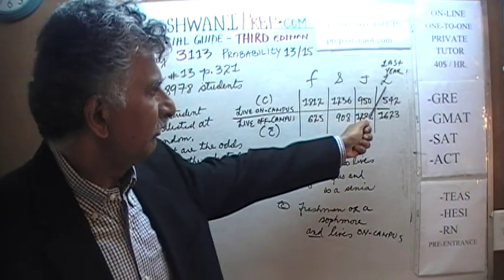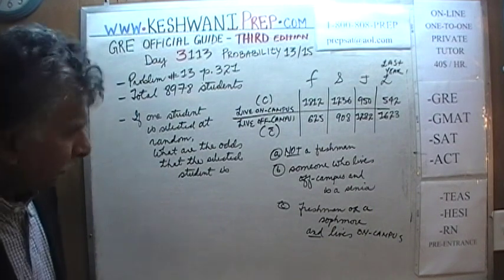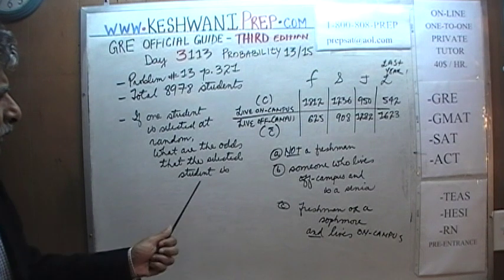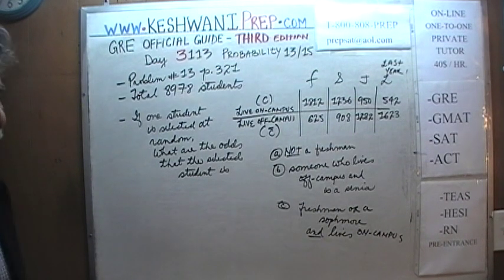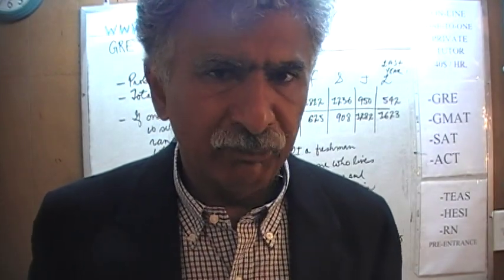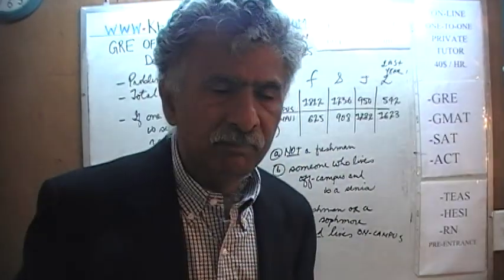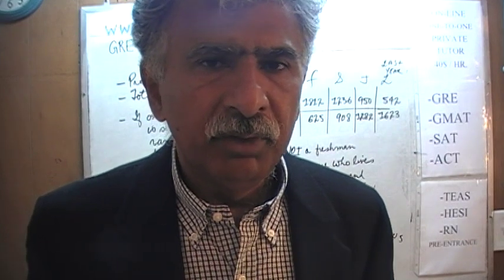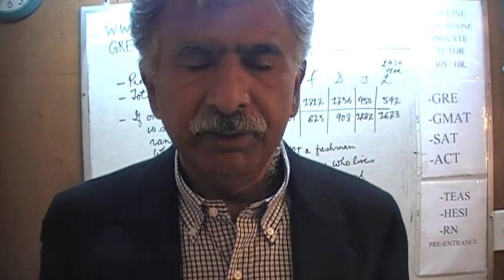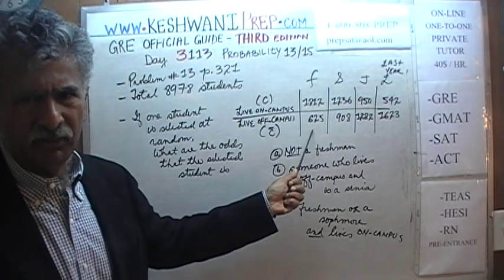So freshmen, sophomores, juniors, and kids who are in the last year of their college — the seniors. Before I get going, I want to make a couple of quick comments. This problem did not appear in the first and second editions. Typically they do not give you ugly numbers like these. These numbers are ugly, horrible, horrendous numbers.